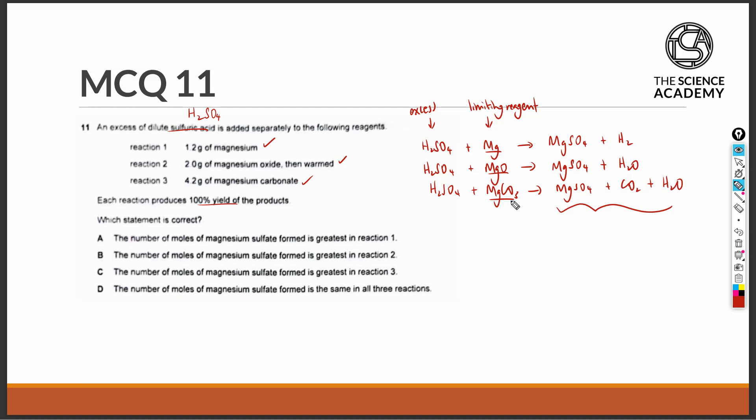It will only be fair if we compare the amount based on the number of moles of each of the second reactants. The number of moles of magnesium can be found by taking the mass divided by the atomic mass of magnesium, which is 24. This gives us 0.05 moles of magnesium.